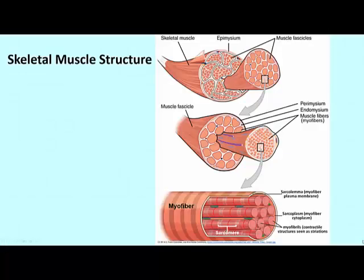Here we have a muscle bundle, which is basically the muscle that you would give a name, like biceps. The muscle is surrounded by a membrane, or a sheath, and inside the sheath is this bundle of muscle cells, called myofibers.